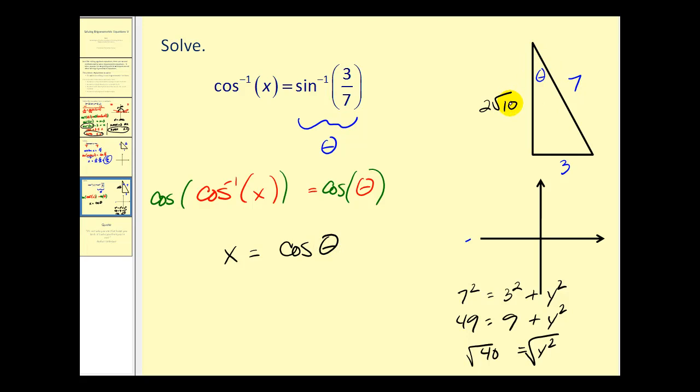So since we can now find cosine θ, which would be the adjacent side or 2 square root of 10 over the hypotenuse which is 7, we've found the value of x.